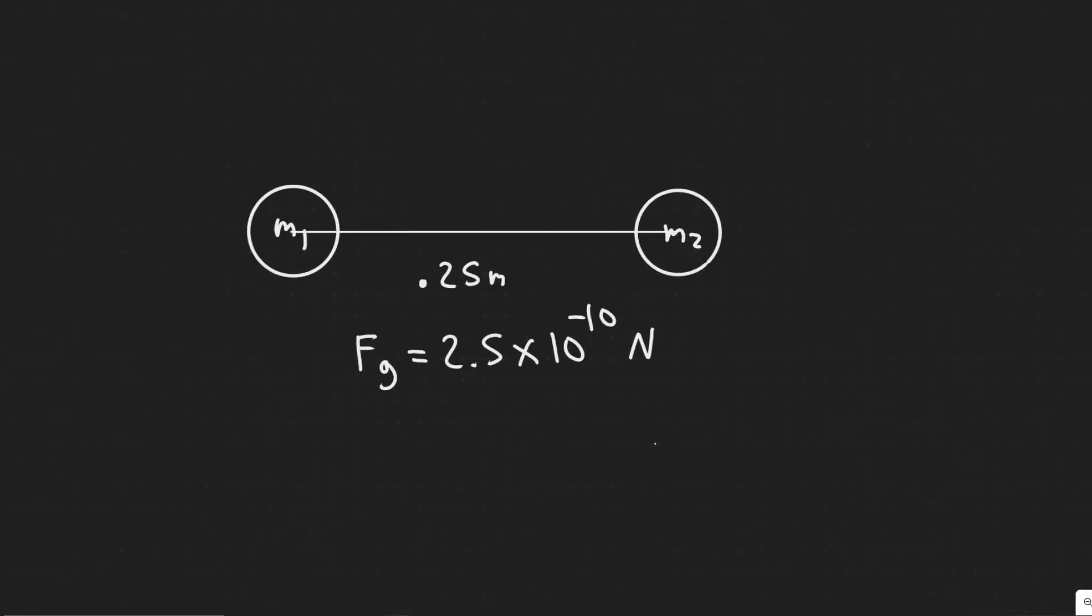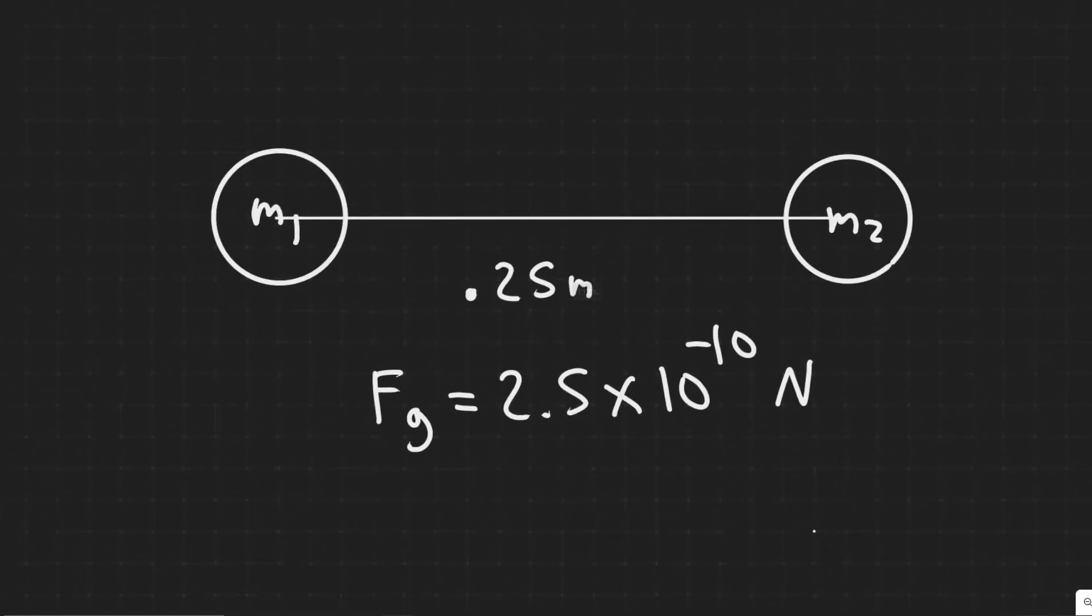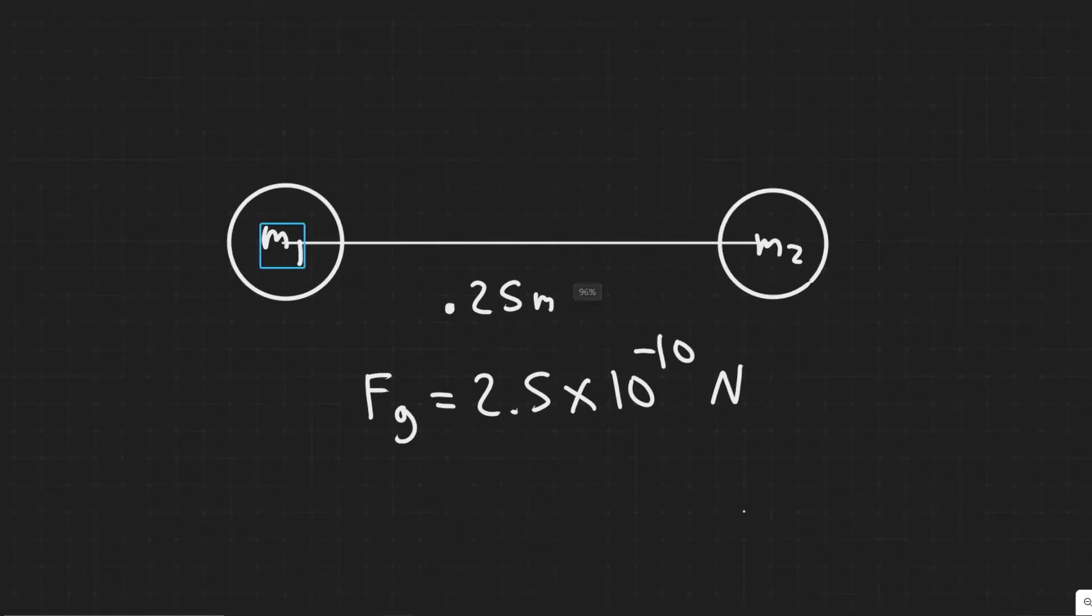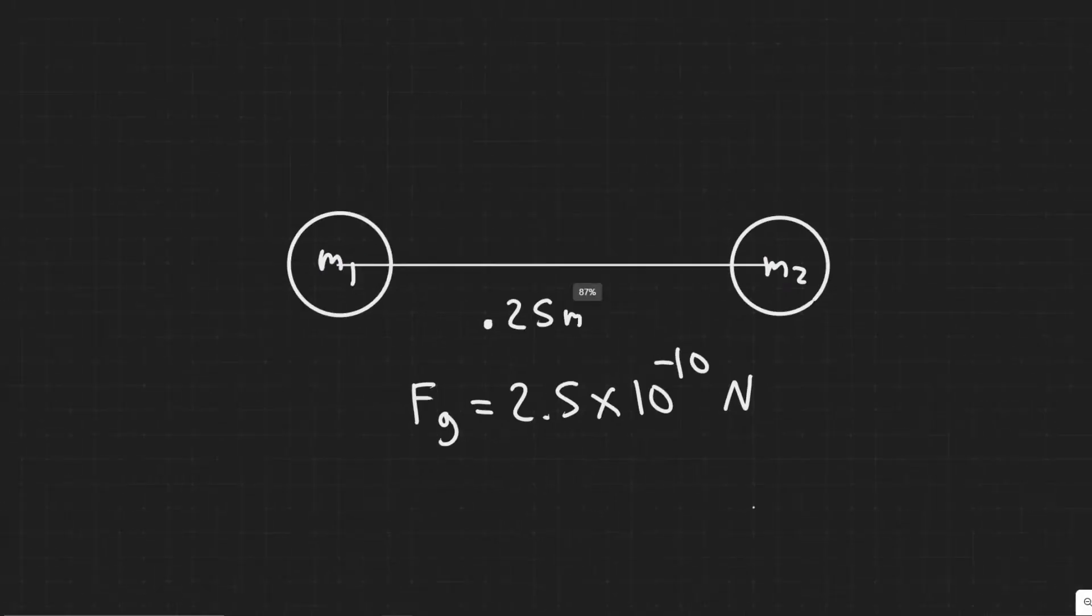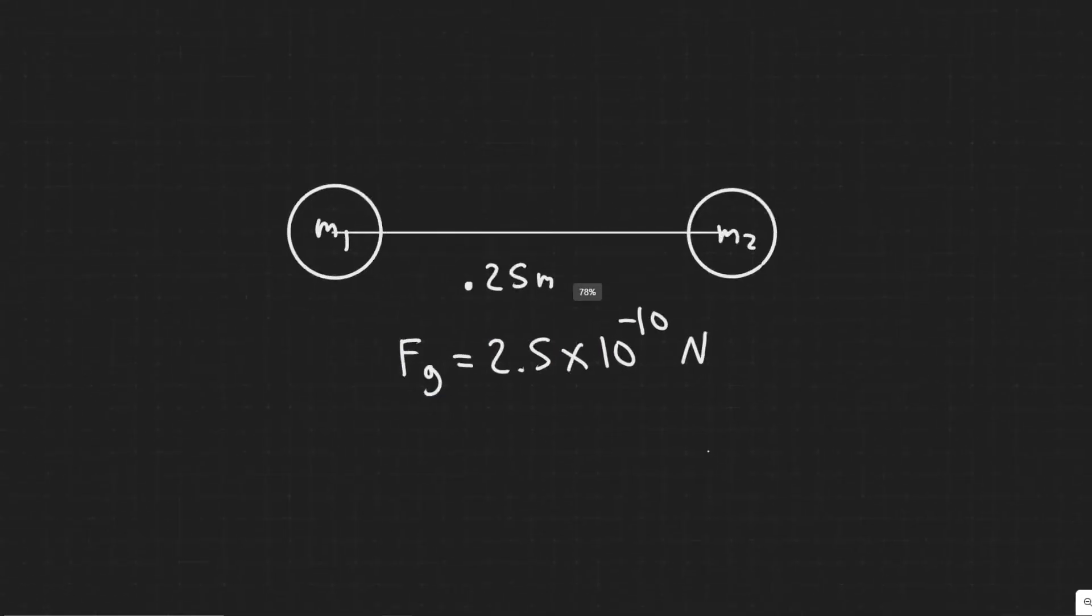So in order to solve this problem we're going to say these are our two masses. We're going to note this one with m1 and this one with m2 and we're told they're a distance of 0.25 meters apart and the force due to gravity is 2.5 times 10 to the minus 10 newtons.